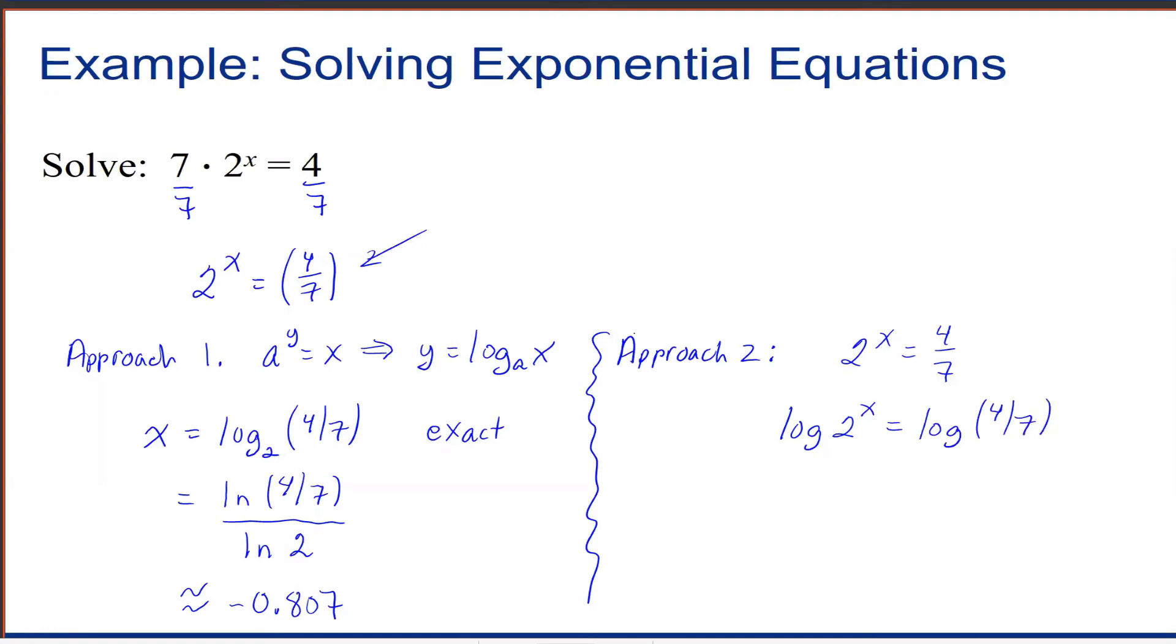Now, because I'm taking the log of an exponential expression, the exponent can come down in front and I get x times log of 2 equals log of 4/7. Divide by log 2, and you get that x is log of 4/7 over log of 2. That would be an exact answer.